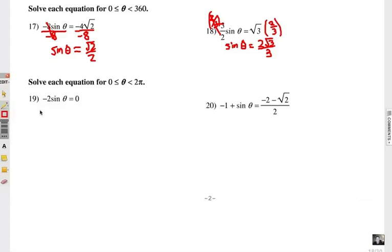For number 19, we're going to divide each side by negative two. So sine theta has to be, what is the answer to zero divided by negative two? Of course, it's got to be zero. So we're going to look for the sine value where it is zero. What angle gives us the sine of zero? Now let's go ahead and look at number 20, and then we'll get to the unit circle.